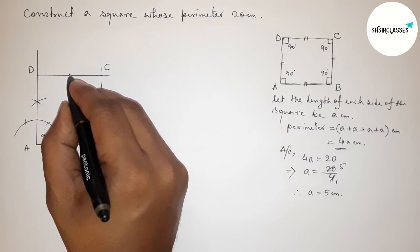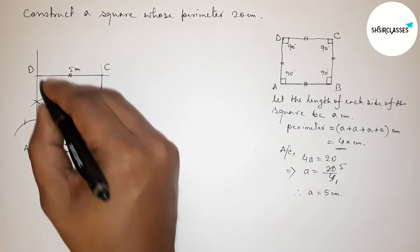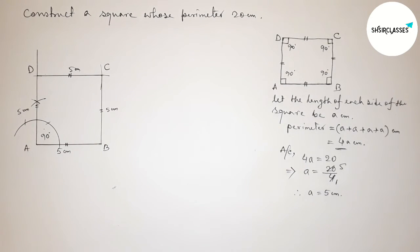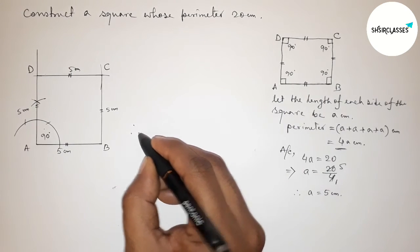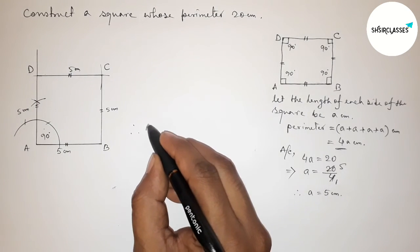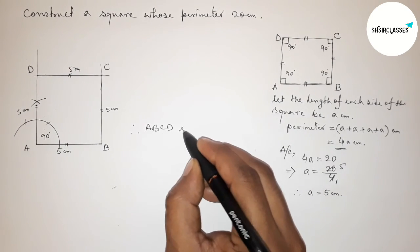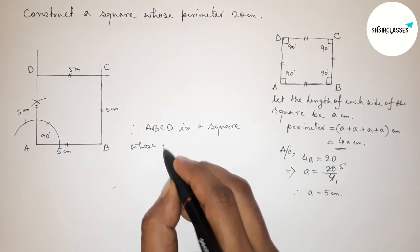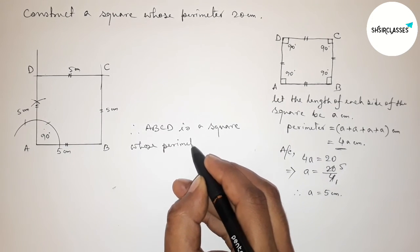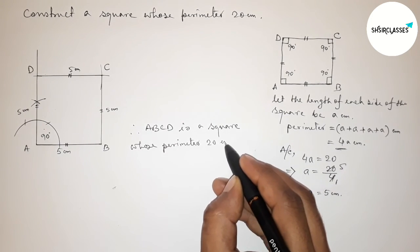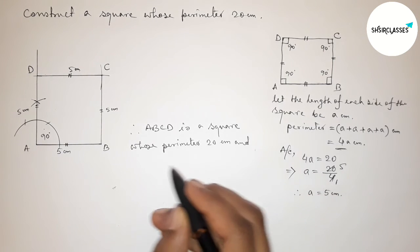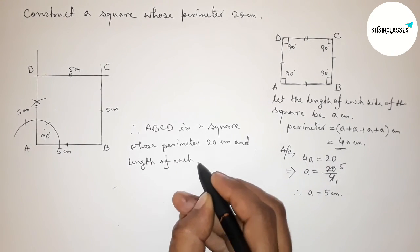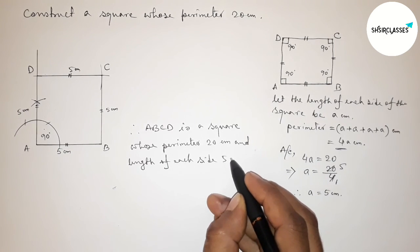So AB equals 5 centimeters, this side also 5 centimeters, this side also 5 centimeters, and this side also 5 centimeters. Therefore ABCD is a square whose perimeter equals 20 centimeters and the length of each side equals 5 centimeters. That's all.